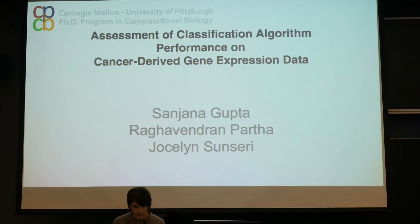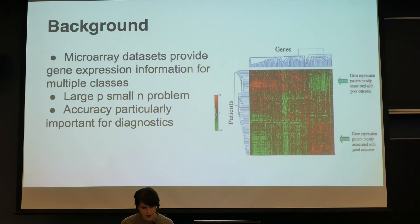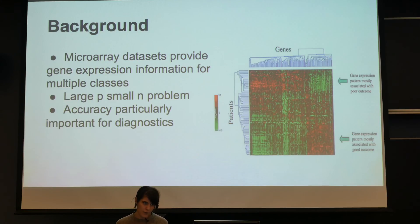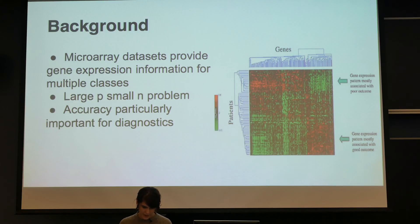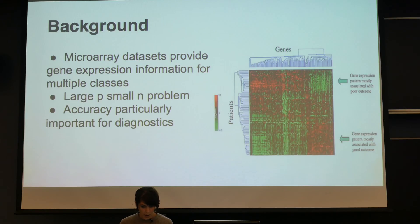We started by looking at the problem of classifying cancer types based on gene expression profiles. There is an explosion of data in biological sciences, especially in gene expression — we have profiles for patient populations that look at a large number of genes and their expression levels. This ends up being a large-p small-n problem, the curse of dimensionality, because we're looking at a feature space on the order of 20,000 genes but typically only have 50 or 100 patient samples. We also care a lot about accuracy because we're doing diagnostics — false negatives are really bad.